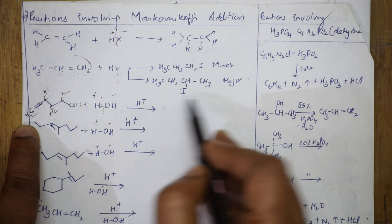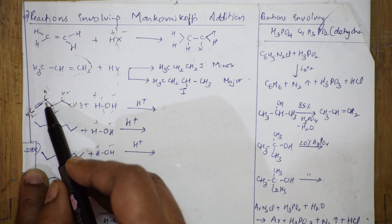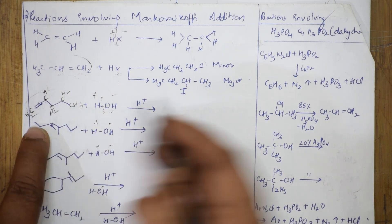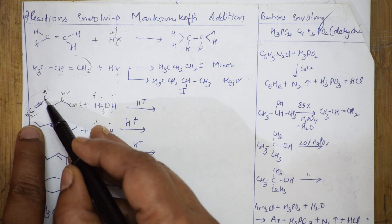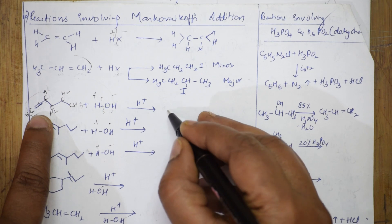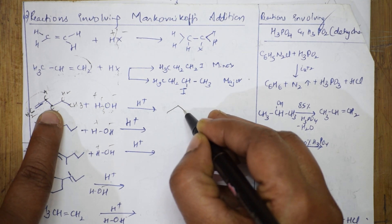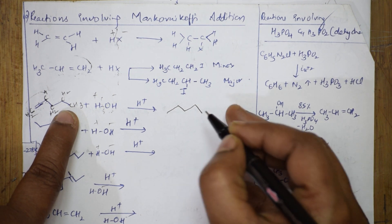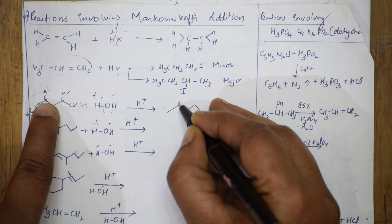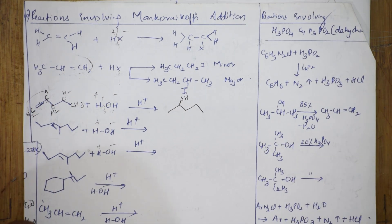Which carbon has fewer hydrogens? This carbon has only one hydrogen atom. So copy the bond line structure — first carbon, second, third, fourth — never write the double bond again because we broke it. You have to add OH to this carbon with fewer hydrogens. That is the major product.